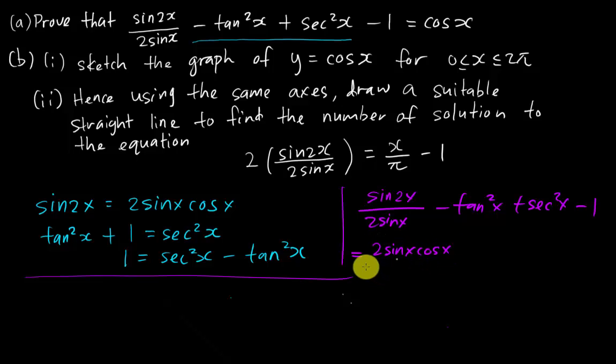Alright, then 2sinx and 2sinx I will simplify. I will have left cosx minus 1 plus 1 is 0. So proven, just like this.